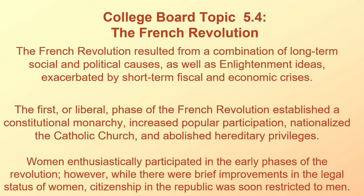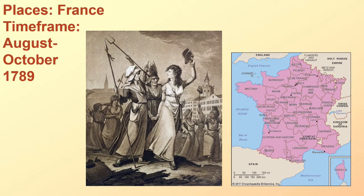We're expanding a little bit. The French Revolution resulted from a combination of long-term social and political causes, as well as Enlightenment ideas exacerbated by short-term fiscal and economic crisis. The first or liberal phase of the French Revolution established a constitutional monarchy, increased popular participation, nationalized the Catholic Church, and abolished hereditary privileges. Women enthusiastically participated in the early phases of the Revolution; however, while there were brief improvements in the legal status of women, citizenship in the Republic was soon restricted to men. The place is still France; the time frame is August to October or so, 1789.